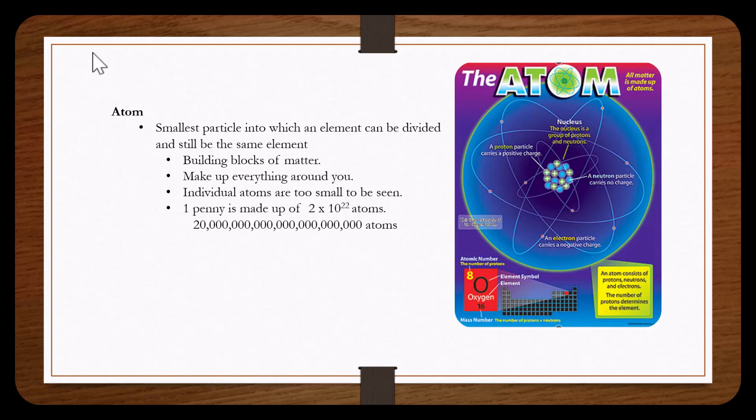An atom is the smallest particle into which an element can be divided and still be the same element. Atoms are building blocks of matter. They make up everything around you. Individual atoms are too small to be seen.